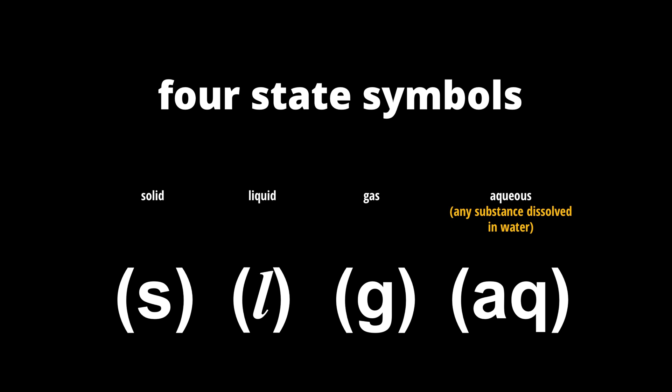There are four state symbols that we can use: solids shown by (s) in brackets, liquids shown by (l), gas shown by (g), and aqueous to represent any substance dissolved in water, shown by (aq). These are the four state symbols that we use.